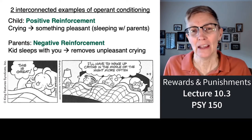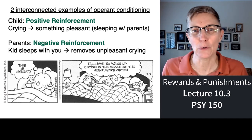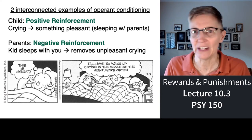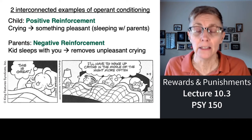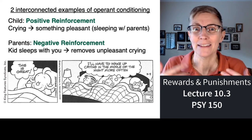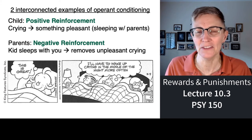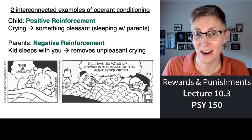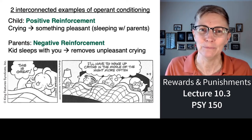In operant conditioning, if you're looking at the interaction of two people, something can be a positive reinforcer for one person and a negative reinforcer for the other. I've got a cartoon here of a child who's crying. The child gets positively reinforced by crying in his bed because he gets to leave his bed and sleep with his parents. For the parents, it's a negative reinforcer because they stopped the crying by putting the kid in the bed with them.